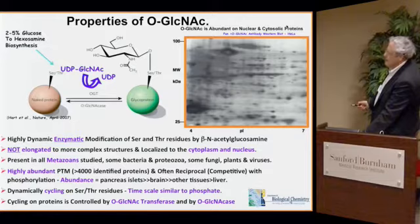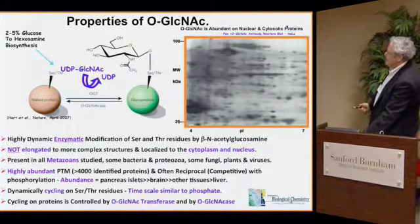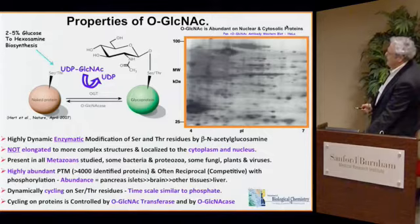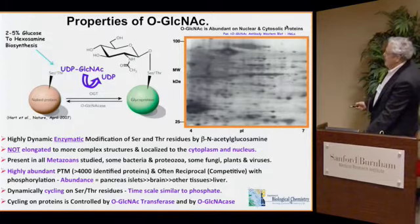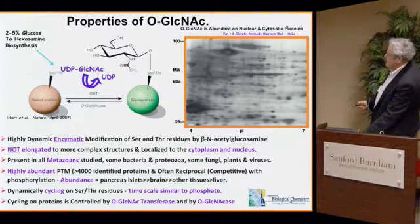Phosphorylation is the switching mechanism that regulates cellular metabolism and signaling. It turns out that O-GlcNAc, in a competitive relationship with phosphorylation, is actually a nutrient regulator of these processes. It's most abundant in the pancreas — the beta cells — where it regulates insulin biosynthesis, and also in the brain. It cycles very rapidly on a timescale similar to phosphorylation, and the cycling is controlled by these enzymes.